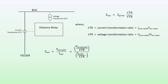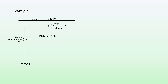Similarly, the secondary current is simply the primary current divided by the CT ratio. Rearranging this, I'll end up with V primary phase divided by I primary, times the CT ratio divided by the VT ratio constant — and that of course is our primary impedance times the CT ratio over VT ratio, which is what we were trying to demonstrate.